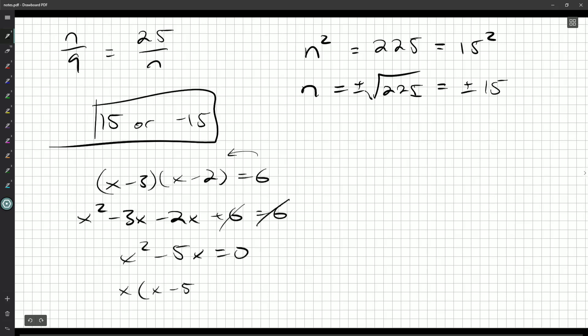We can factor that. Or if you need to use the quadratic formula, that's fine as well. But we can factor, take out, factor x, x times x minus 5 is 0. And so x is either 0 or 5.